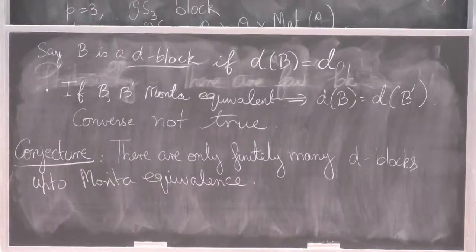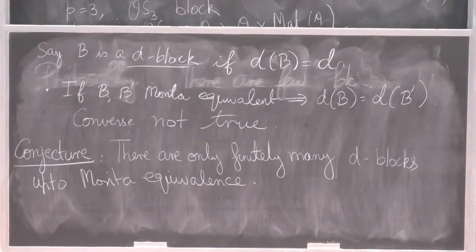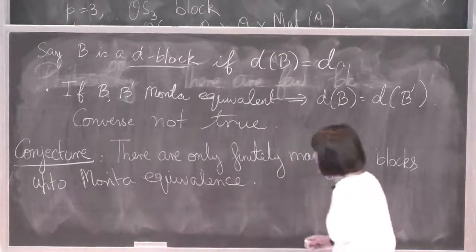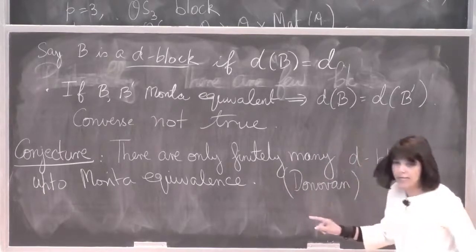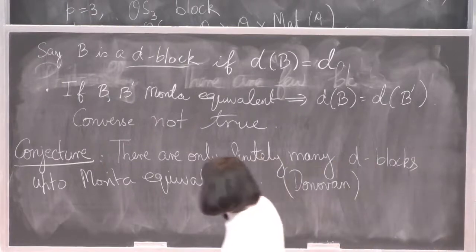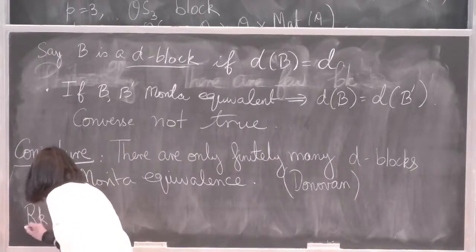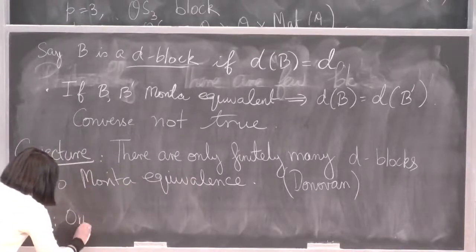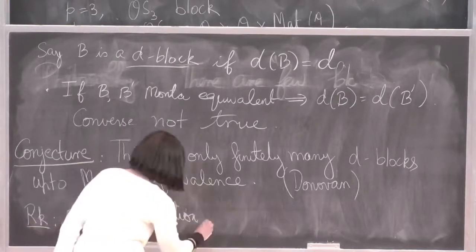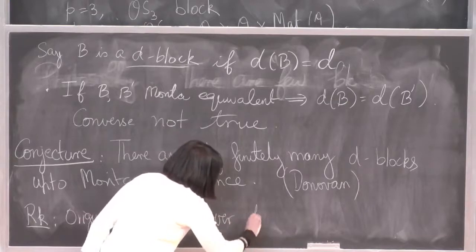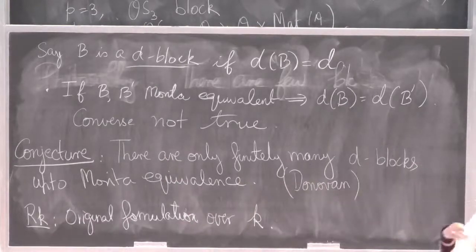For this conjecture to have content: if you fix a non-negative integer D, there are infinitely many groups which will have a D-block, so you really do have to do some work to boil it down. This is a conjecture due to Donovan. I should remark that the original formulation is only over the residue field k — so for blocks of little kG.